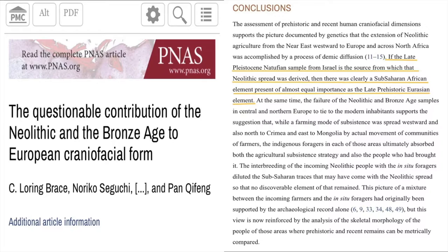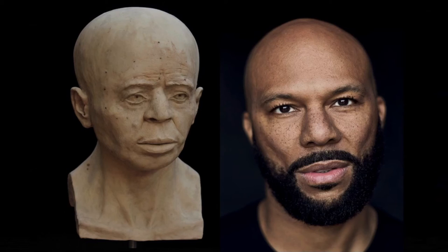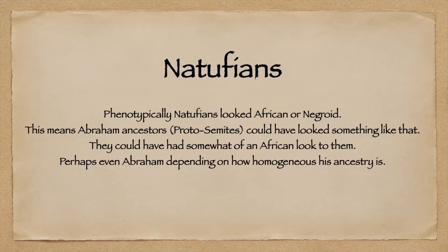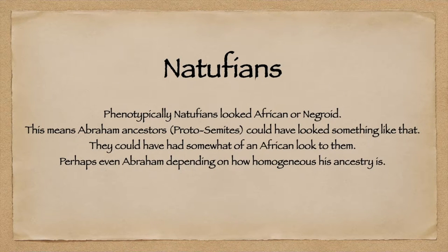Natufians phenotypically looked very sub-Saharan African. The rapper Common is given as a good example of what a Natufian would look like in the flesh — looking at Common's features and the Natufian's features such as the nose, cheekbones, lips, forehead, eyes, and the shape of the head, they all seem to look very similar. So phenotypically, Natufians basically looked African or Negroid. This means Abraham's ancestors — proto-Semites or pre-proto-Semites — could have looked something like that, with somewhat of an African look, perhaps even Abraham depending on how homogenous his ancestry is.